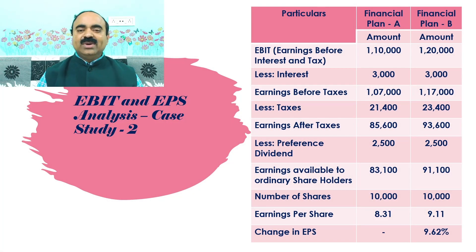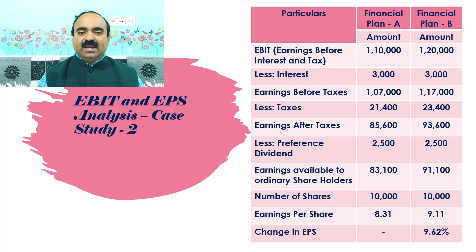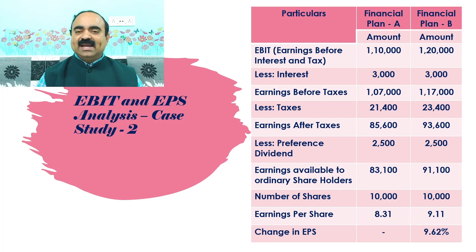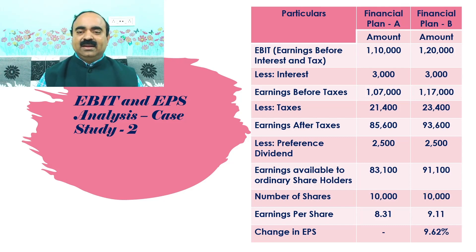Dear students, I had taken three columns in the solution table. In the first column, I had taken particulars. In the second column, I had taken Financial Plan A, in which EBIT is taken as Rs. 1,10,000. In the third column, I had taken Financial Plan B, in which EBIT is taken as Rs. 1,20,000.